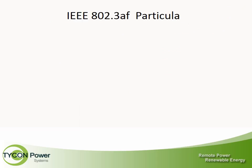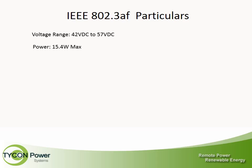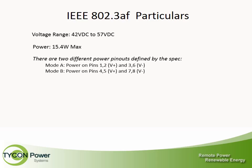802.3 AF particulars: The voltage range is 42V DC to 57V DC, and power is 15.4W maximum. There are two different power pin-outs defined by the spec — Mode A and Mode B. Mode A uses pins 1 and 2 as voltage plus, and pins 3 and 6 as voltage minus. Mode B uses pins 4 and 5 as voltage plus, and pins 7 and 8 as voltage minus.